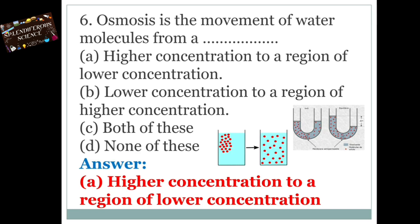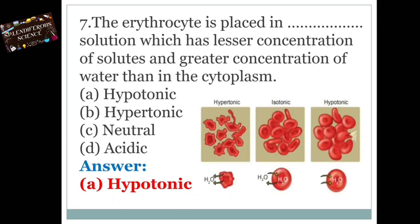The answer is Option A — higher concentration to a region of lower concentration. Osmosis is the movement of water molecules from a higher concentration to a region of lower concentration. The erythrocyte is placed in dash solution which has a lesser concentration of solutes and greater concentration of water than in the cytoplasm. Option A: Hypotonic. Option B: Hypertonic. Option C: Neutral. Option D: Acidic. The answer is Option A, Hypotonic.